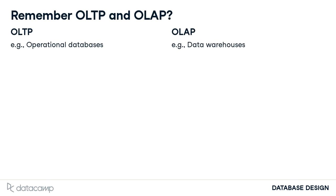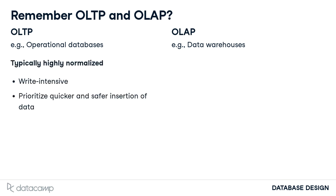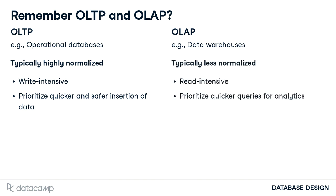Remember OLTP and OLAP? Can you guess which prefers normalization? Pause and think about it. Did you get it right? OLTP is write intensive, meaning we're updating and writing often. Normalization makes sense because we want to add data quickly and consistently. OLAP is read intensive because we're running analytics on the data. This means we want to prioritize quicker read queries. Remember how many more joins the normalized query had over the denormalized query? OLAP should try to avoid that.